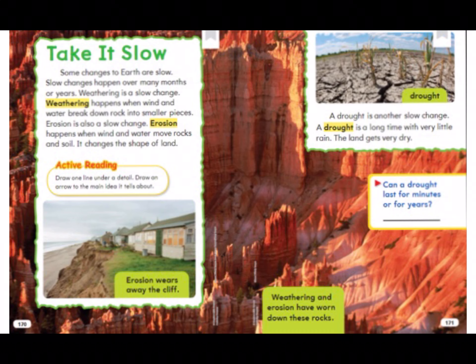Some changes to Earth are slow. Slow changes happen over many months or years. Weathering is a slow change — it happens when wind and water break down rock into smaller pieces. Erosion is also a slow change; erosion happens when wind and water move rocks and soil, and it changes the shape of the land. A drought is another slow change — a long time with very little rain, and the land gets very dry. Can a drought last for minutes or for years? A drought lasts for years.